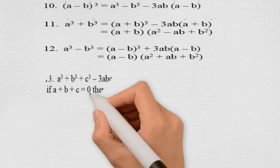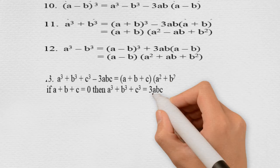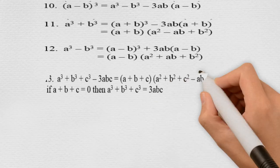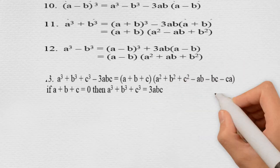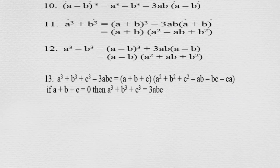The thirteenth identity is a cube plus b cube plus c cube minus 3abc, which is equal to (a + b + c) into (a square plus b square plus c square minus ab minus bc minus ca). And if a plus b plus c is equal to 0, then the identity a cube plus b cube plus c cube becomes equal to 3abc.